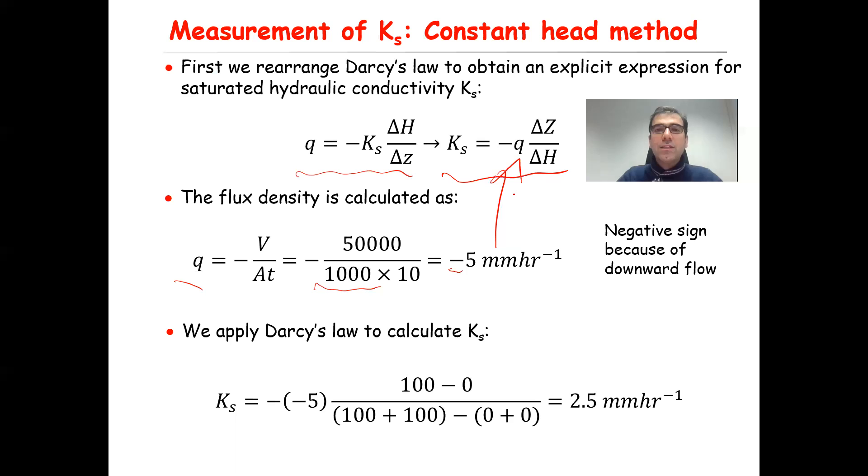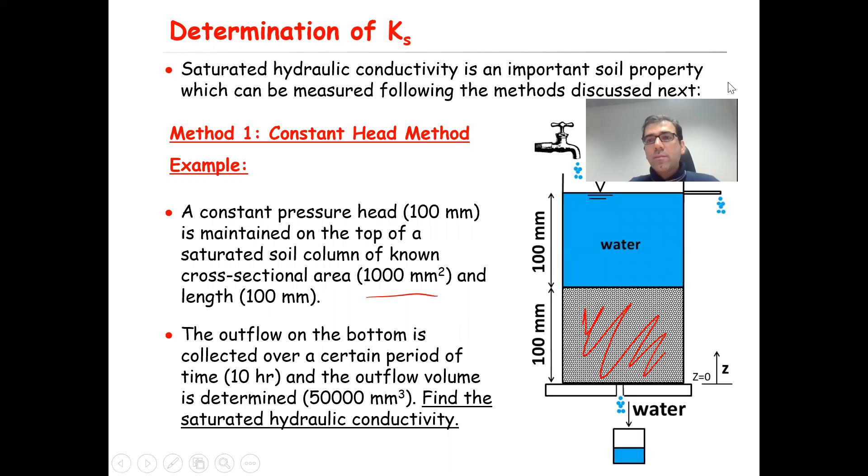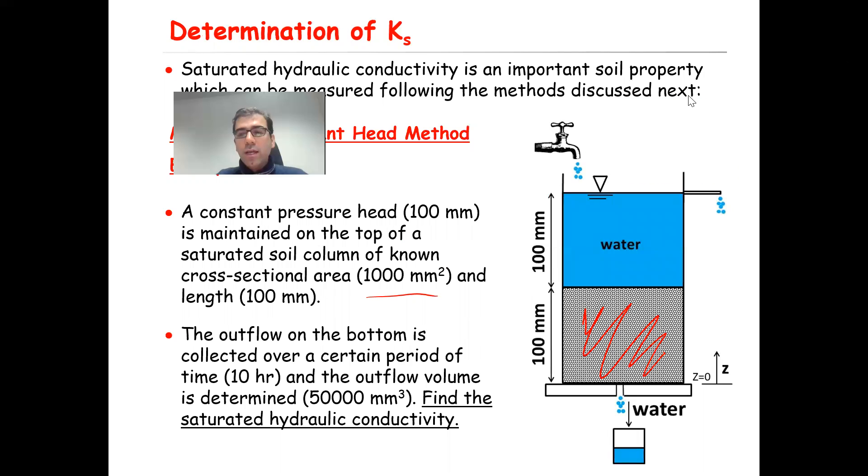Therefore, Ks will be equal to minus, the minus is here, q, and instead of q I put minus five times delta z over delta h. So that means you need to calculate these parameters. Let's go back to the previous slide. If we assume z, the reference level is here, let's call this point one, and this one point two.